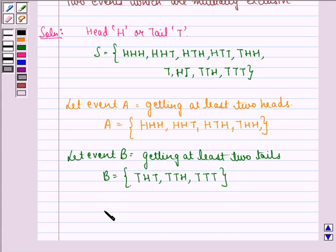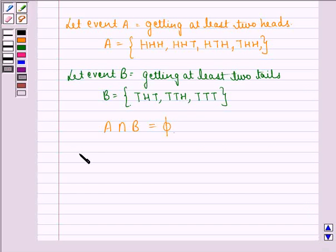Now we see that A intersection B equals phi because in these 2 sample spaces, no element is common. Since their intersection equals phi, therefore event A and event B are mutually exclusive.